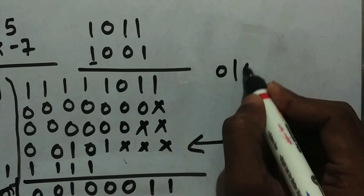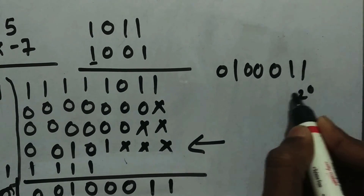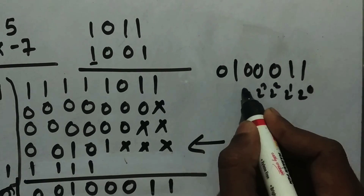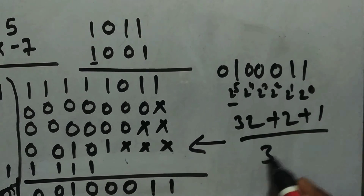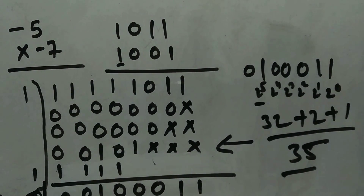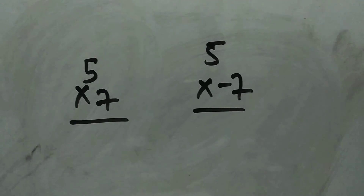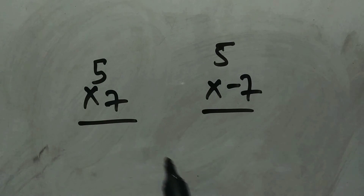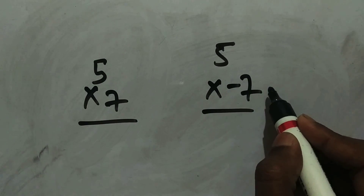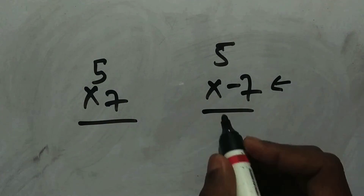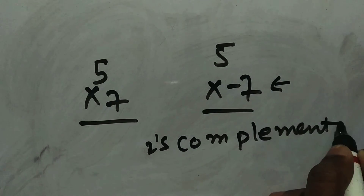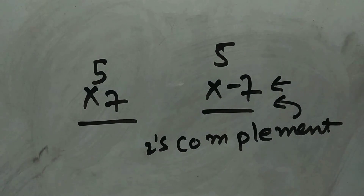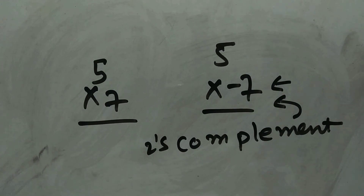Let's determine the value of our 8-bit result: 0100011. The bit positions 2⁵ is 32, 2¹ is 2, and 2⁰ is 1, giving 32 plus 2 plus 1 equals 35. Minus 5 times minus 7 is indeed 35 — correct! We have two more examples: minus 5 times 7 (already done), and 5 times minus 7. For 5 times minus 7, remember minus 7 is at the bottom, so we must two's complement the last partial product.